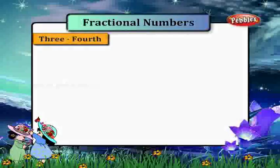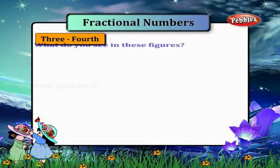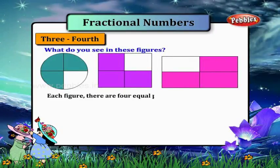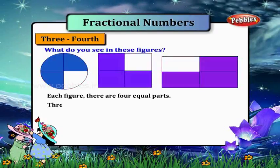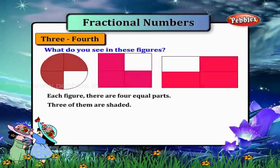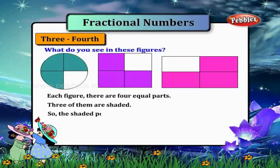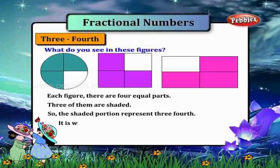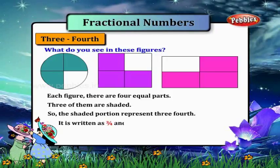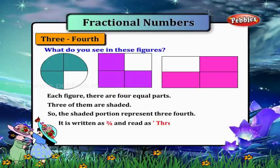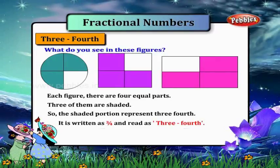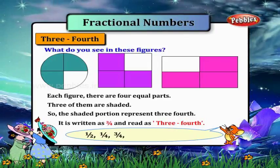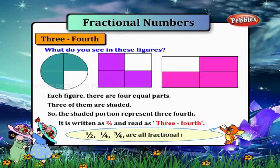Three fourth. Now what do you see in these figures? In each figure, there are four equal parts, and three of them are shaded. So the shaded portion represents three fourth. It is written as three by four and read as three fourth. Now, one by two, one by four, and three by four are all fractional numbers.